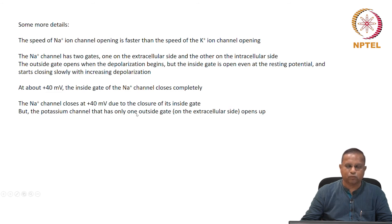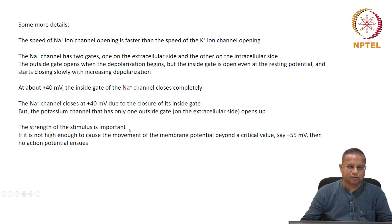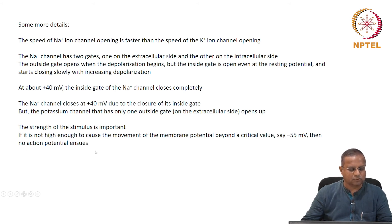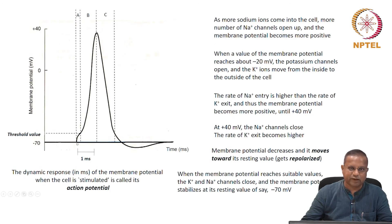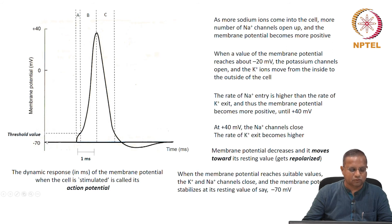The potassium channel has only one outside gate and does not have an inside gate; that gate opens during depolarization. The strength of the stimulus is important — this is the threshold. If the stimulus is not high enough to cause the membrane potential to move beyond a critical value of minus 55 millivolts, then no action potential ensues. If the signal is not strong enough to push the membrane potential beyond minus 55 millivolts, there is no action potential at all.